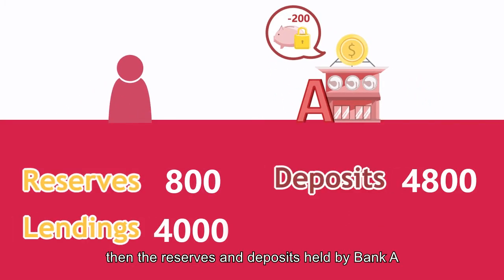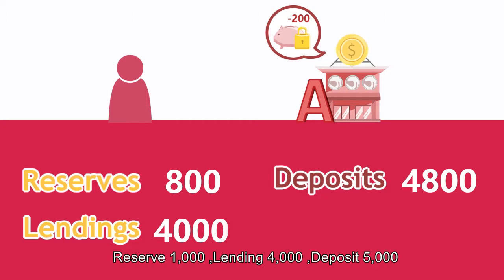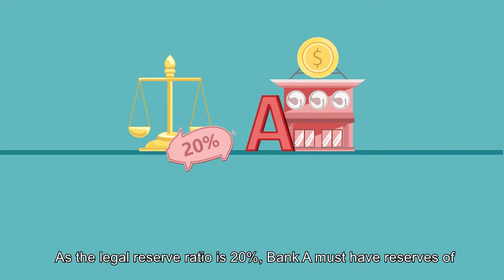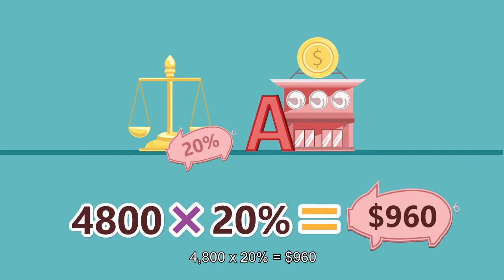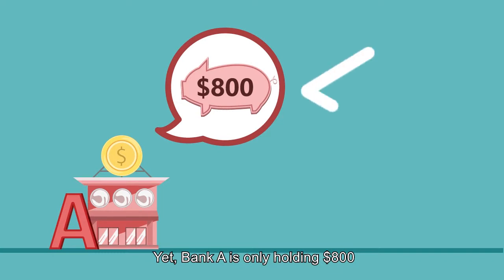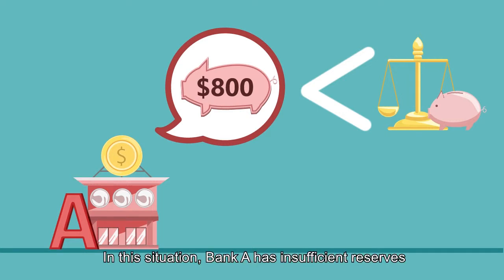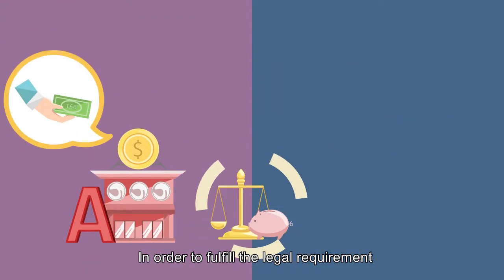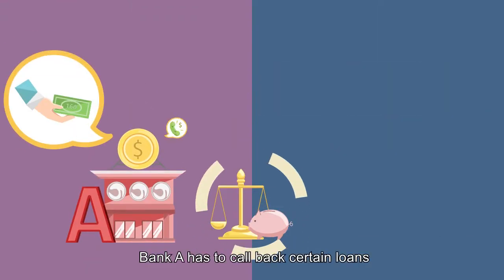If someone draws $200 from Bank A, then the reserves and deposits held by Bank A will immediately decrease by $200. Reserve: $800. Lending: $4,000. Deposit: $4,800. As the legal reserve ratio is 20%, Bank A must have reserves of $4,800 × 20%, which equals $960. Yet Bank A is only holding $800. Therefore, its actual reserves are lower than the legal reserve requirement. In this situation, Bank A has insufficient reserves and would need $160 more to satisfy the reserve requirement.